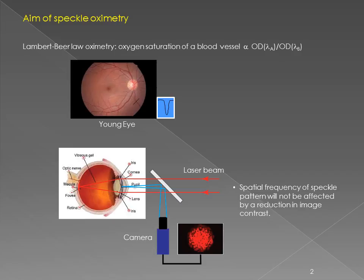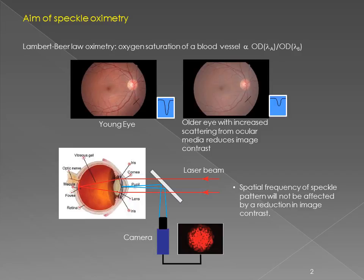We've already heard about some of the disadvantages of Lambert Beer Law based oximetry, and one of them is this very effective contrast reduction. In a young eye, if you look at the transmission profile of the blood vessel shown here in the retina you see this profile, but if we could track ahead 30 years to when the person is much older, that same blood vessel profile has changed, and the result is incorrect determination of the oxygen saturation of the blood vessel.